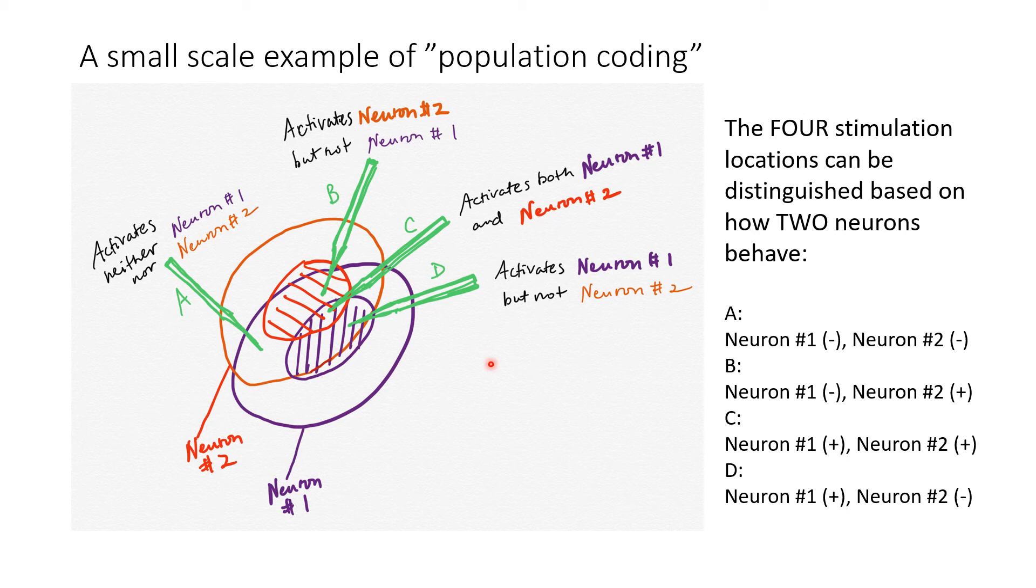Of course, there are many other receptive fields overlapping with these receptive fields to provide even more fine-grained discrimination of stimulus locations. So the basic idea here is population coding, but on a rather small scale.